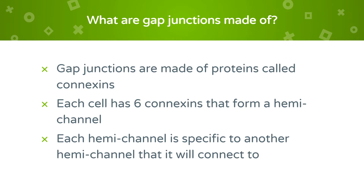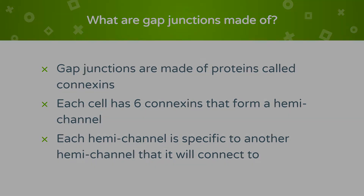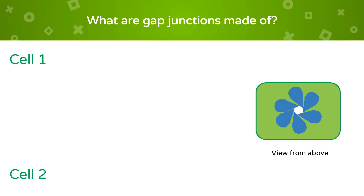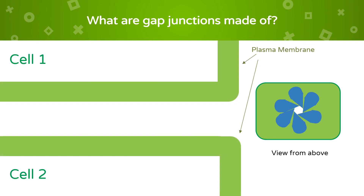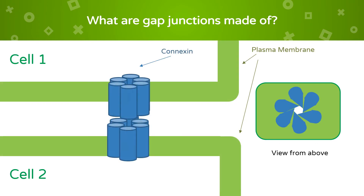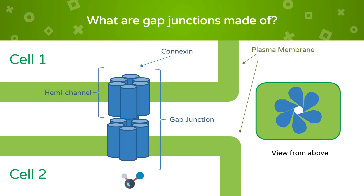For example, connexin 43 will match with another connexin 43. Here we have our two cells with their connected hemichannels creating a gap junction. See the molecule being transported from one cell to the other through the gap junction.